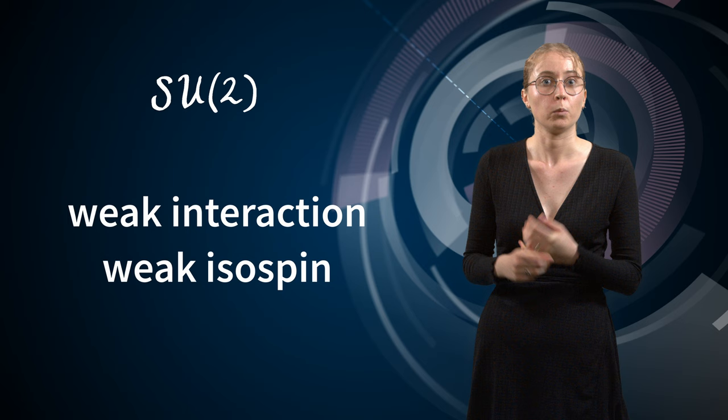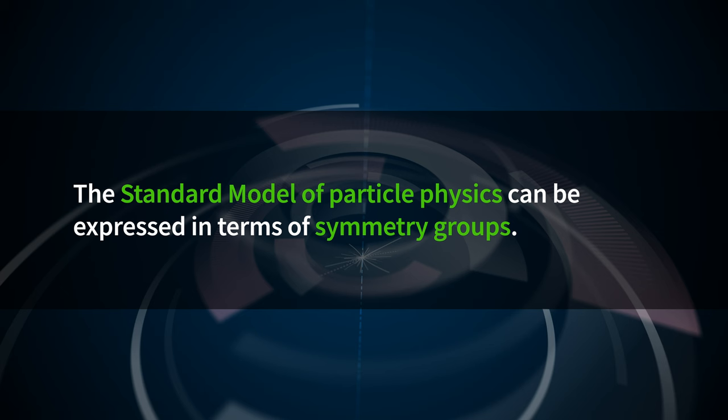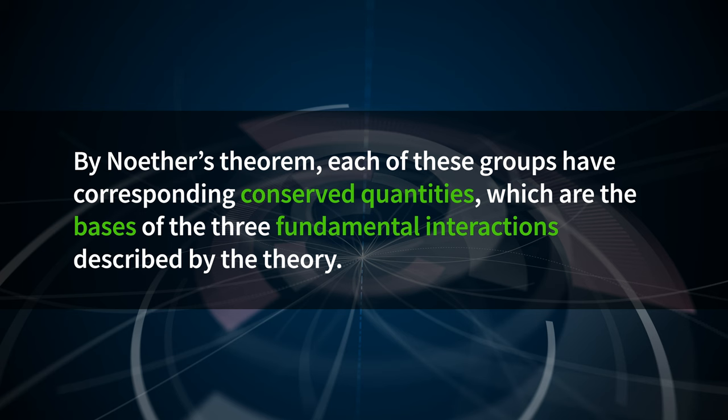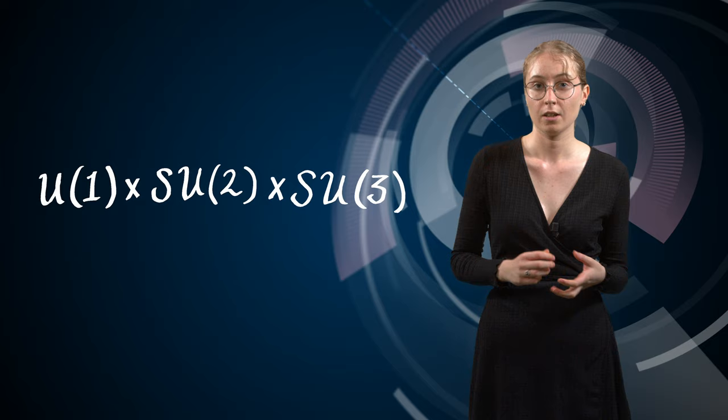Each part of the expression also has an association with one of the three fundamental interactions described by the Standard Model. U(1) is associated with electromagnetism, through the conservation of electric charge. SU(2) is associated with the weak interaction, through the conservation of a quantity called weak isospin. Finally, SU(3) is associated with the strong interaction, through the conservation of another quantity called colour charge. Each of these groups has a corresponding conserved physical quantity, which is the basis of the three fundamental interactions described by the theory.